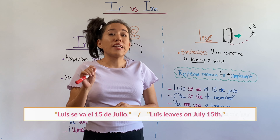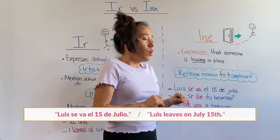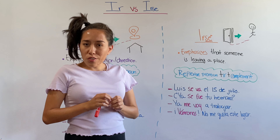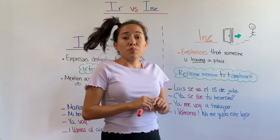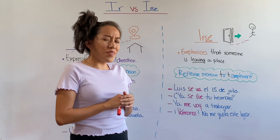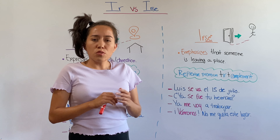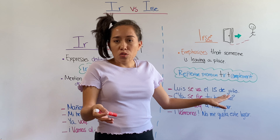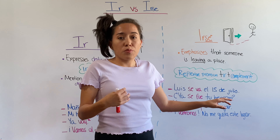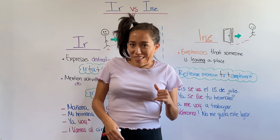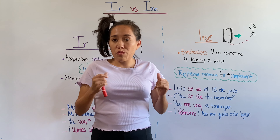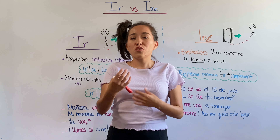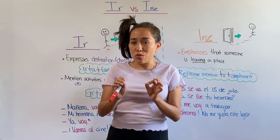'Luis se va el 15 de julio' — Luis leaves on July 15. Where are you going, Luis? Are you taking us? Example number two: '¿Ya se fue tu hermano?' — Did your brother already leave? Notice that in this case I'm not adding any more information — I'm just asking if my brother already left. Check examples three and four because I purposely made them similar to show you the difference between these verbs.